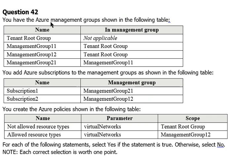Question 42 says: you have the Azure management groups shown in the following table. There is a tenant group which we consider as a root group. Under that root group we have management group 1.1, management group 1.2 which is also part of the root, and management group 2.1 which is part of management group 1.1.